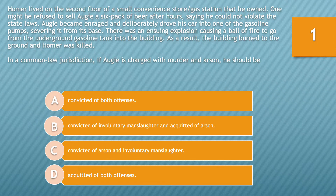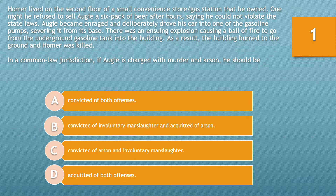Question number 1. Homer lived on the second floor of a small convenience store/gas station that he owned. One night, he refused to sell Augie a six-pack of beer after hours, saying he could not violate the state laws. Augie became enraged and deliberately drove his car into one of the gasoline pumps, severing it from its base. There was an ensuing explosion, causing a ball of fire to go from the underground gasoline tanks into the building.